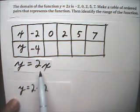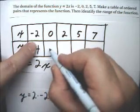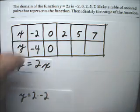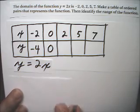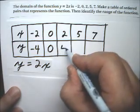When x is 0, we have 2 times 0, so 2 times 0 is 0. When x is 2, we'd have 2 times 2 is 4.